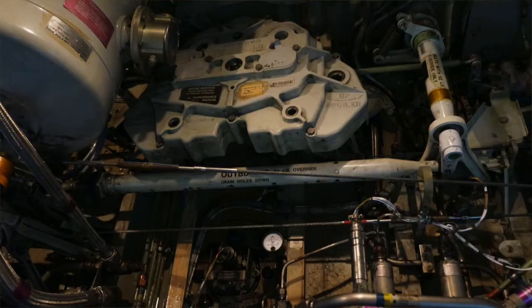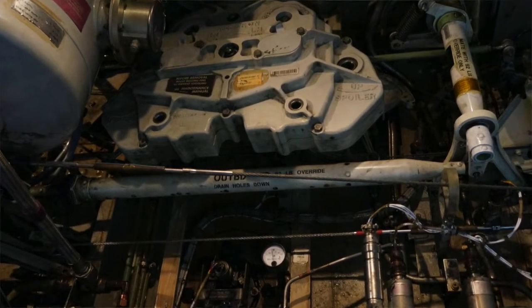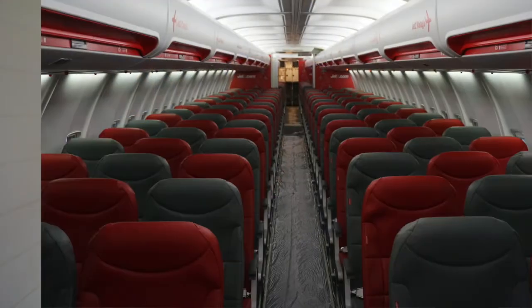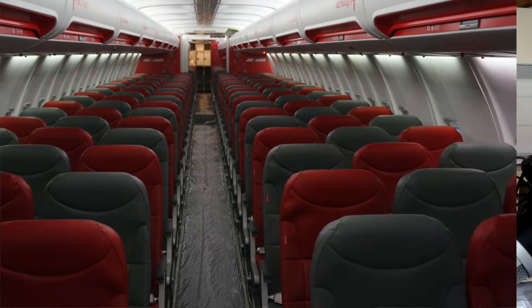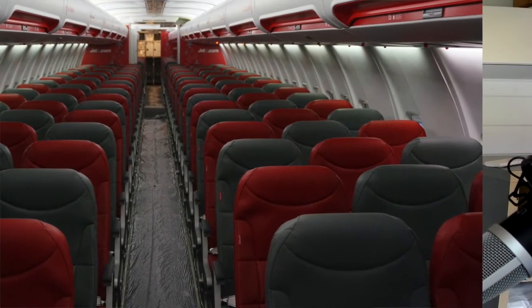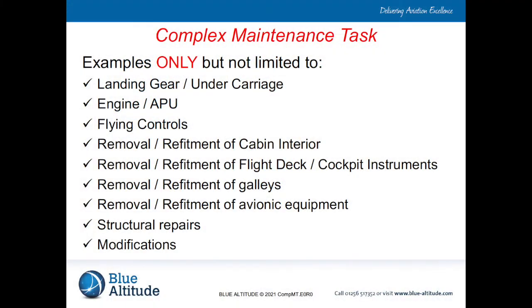The disturbance of the flying controls, whether they're going to be removed or refitted and tested. The removal and refitment of the cabin interior. When you think about the cabin interior, people may not consider that to be a complex maintenance task, but it will involve multiple people, multiple steps, and multiple items to be removed, recorded, and documented. So that is definitely a complex maintenance task.